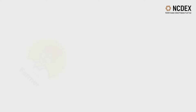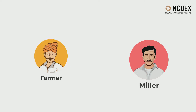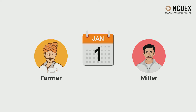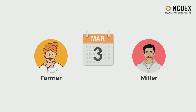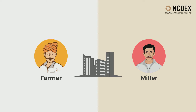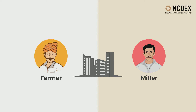Let's understand this with an example of two hedgers: a farmer and a miller. The farmer's Chana crop will be ready in about three months. The miller also needs Chana after three months to produce Chana Dal or Besan. The farmer and the miller individually register as clients of trading members of an exchange.